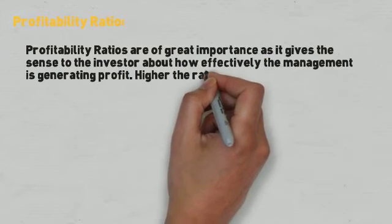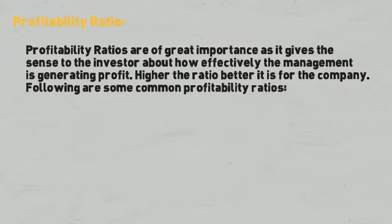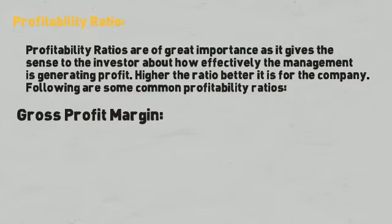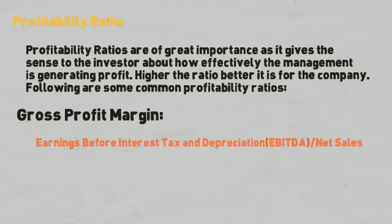Gross profit margin and net profit margin are the two most common profitability ratios. Gross profit margin is calculated by dividing EBITDA by net sales, where EBITDA means earning before interest, tax, and depreciation.